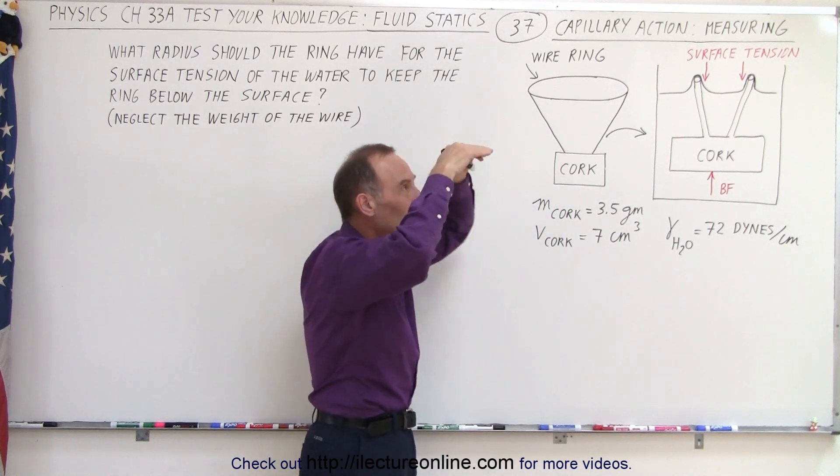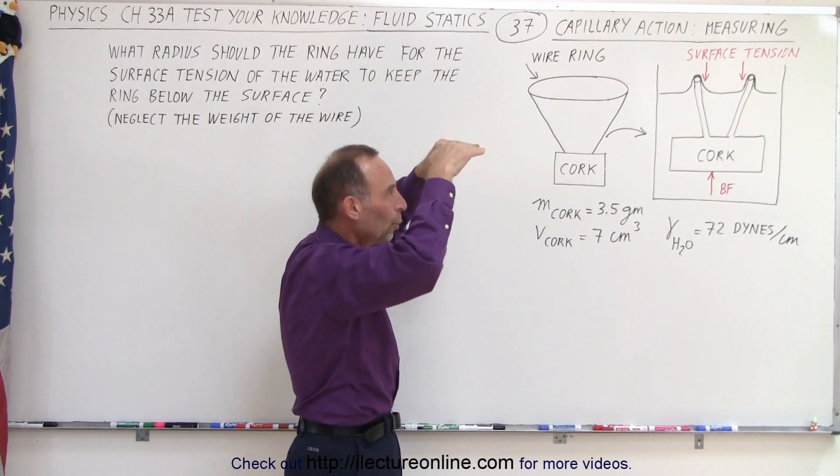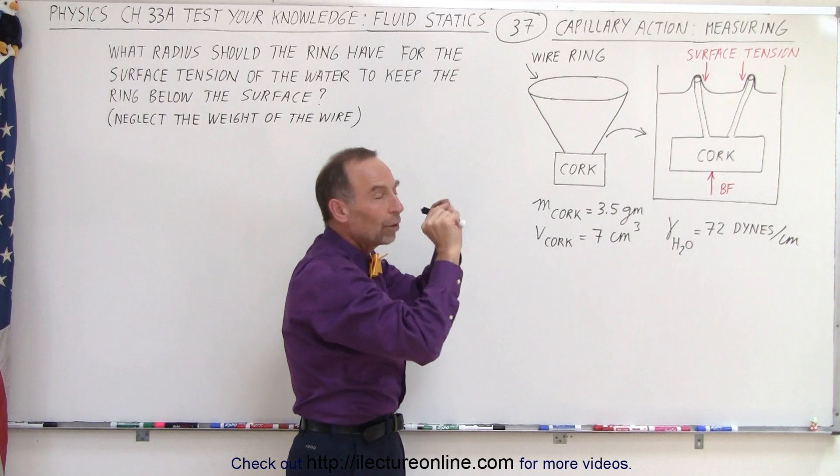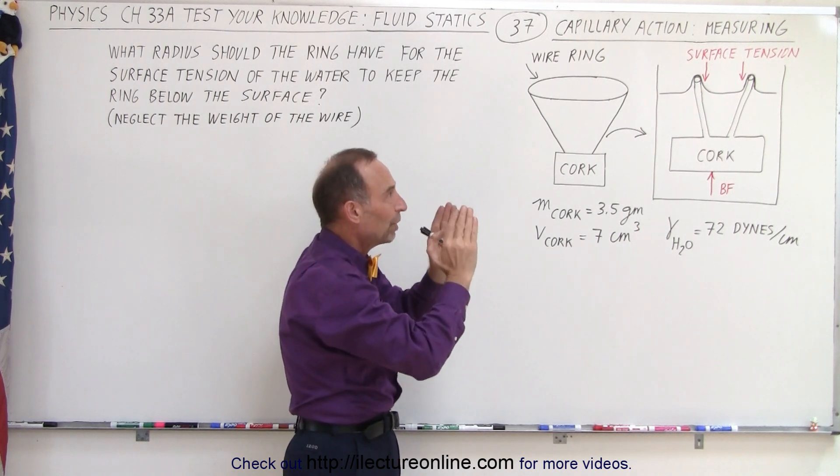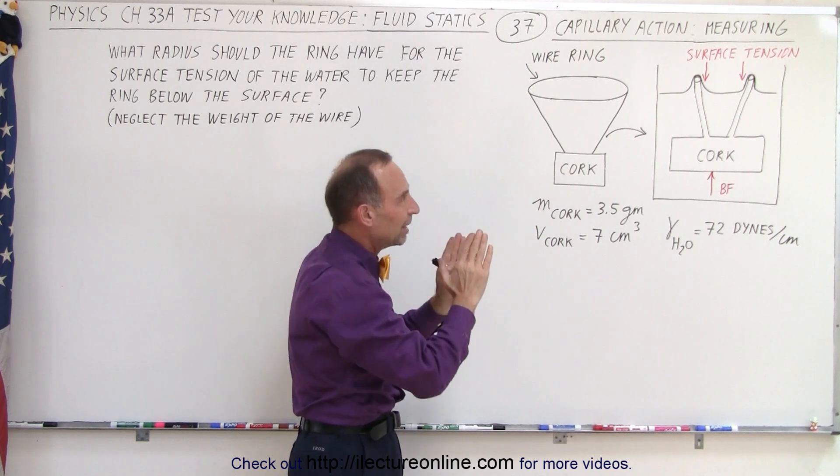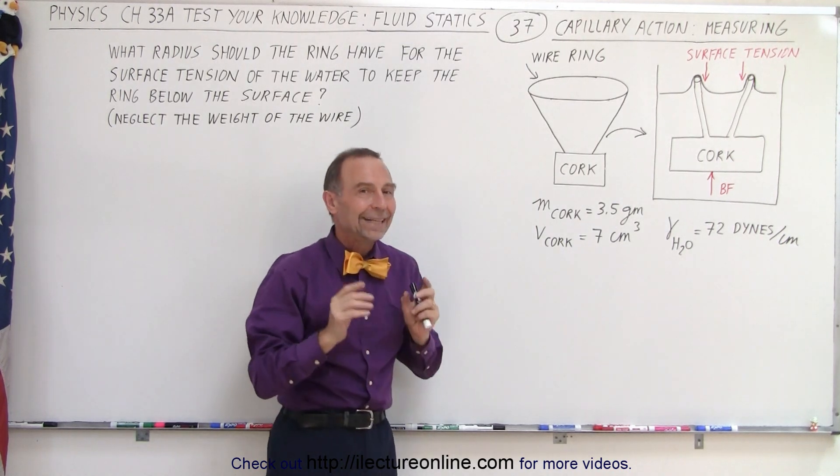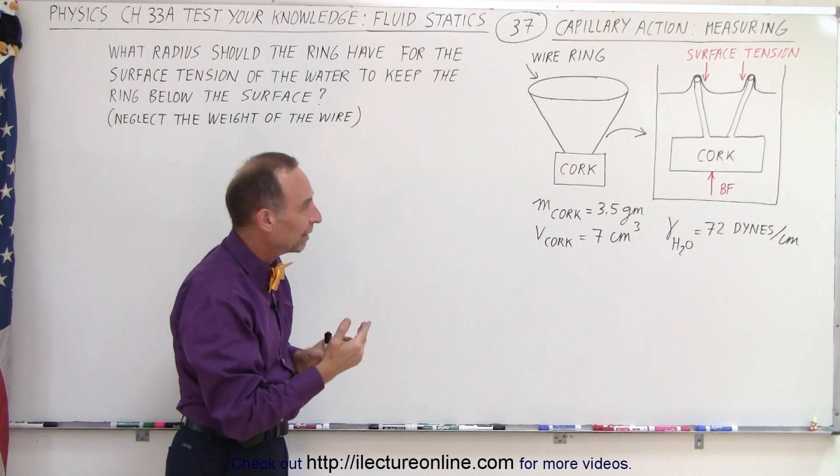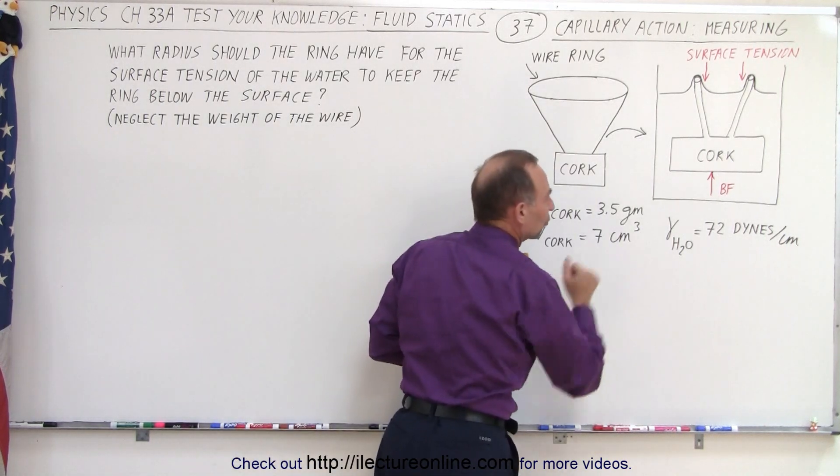We let the wire push up against the surface of the water and we want to find the point just before it breaks through the surface itself. So that surface tension is preventing the wire from going through the surface of the water. Then we can measure or figure out the surface tension of the water.